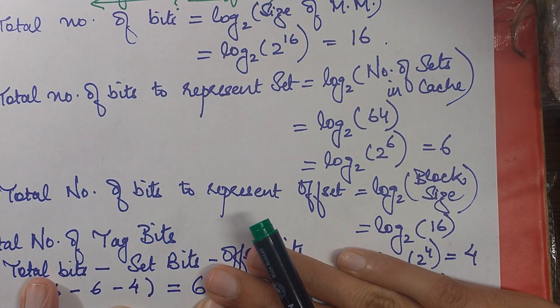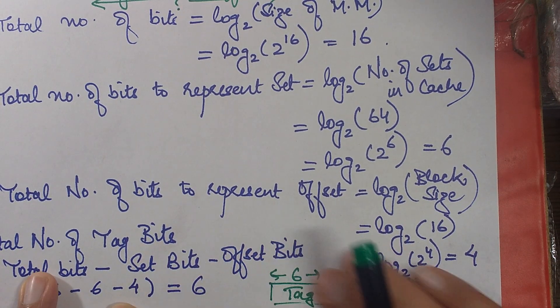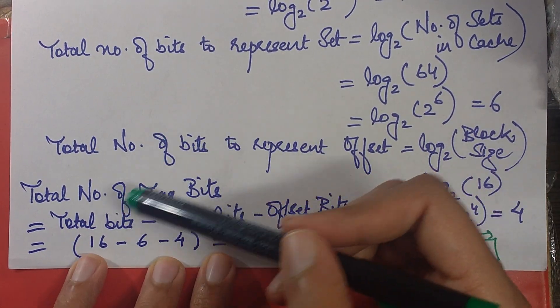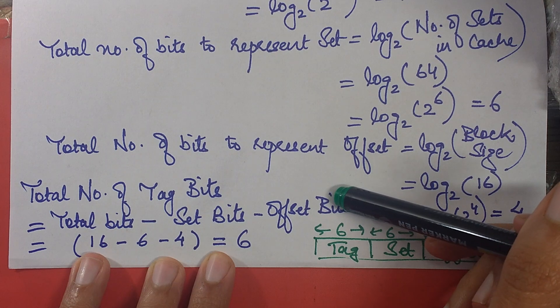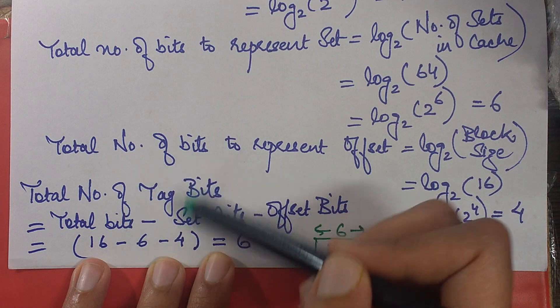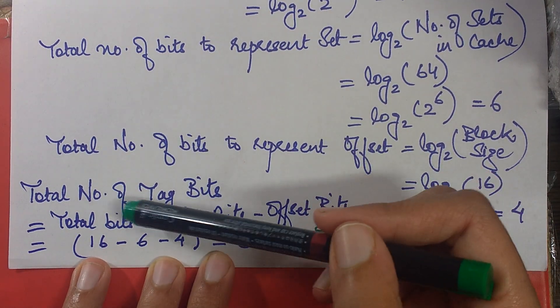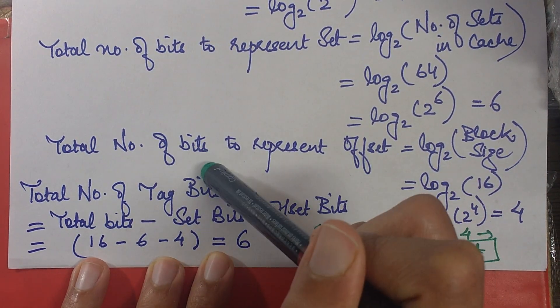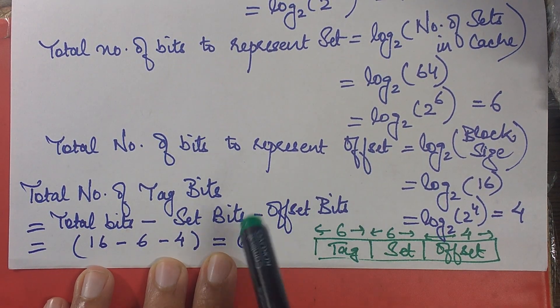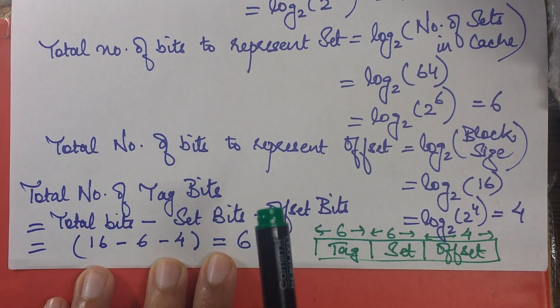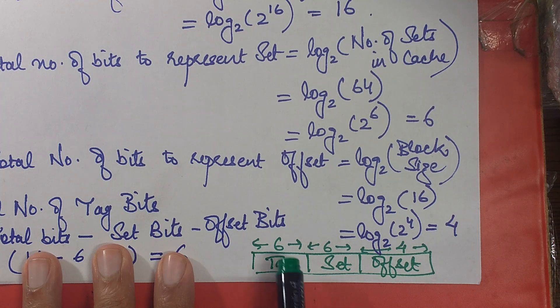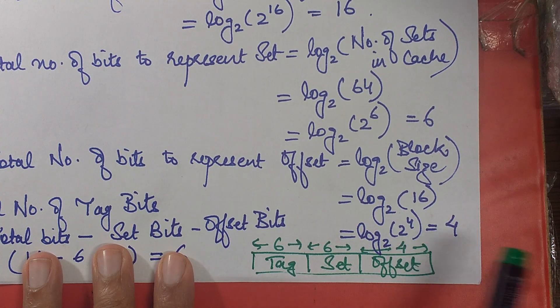Please don't get confused with this. I just need to compute the tag bits before finding this out. Now we have the total bits, we also have the set bits and we also have the offset bits. So the final task is just to find out the difference, the difference that total bits minus set bits minus offset bits will eventually give you the tag bits. So this is 16 minus 6 minus 4, which gives you as 6. So the total number of tag bits are 6. So that gives me this representation, which is tag bits are 6, set bits are 6 and offset bits are 4.